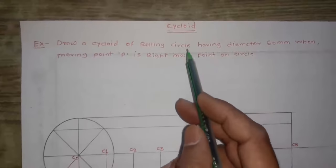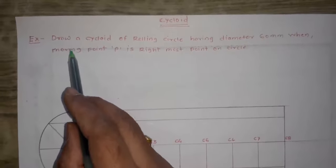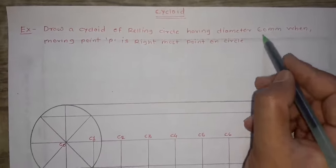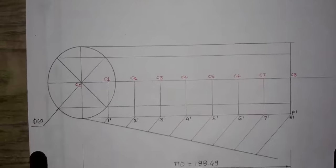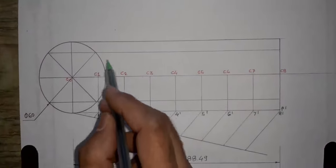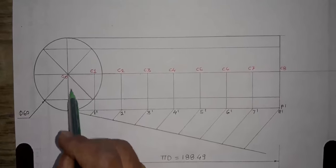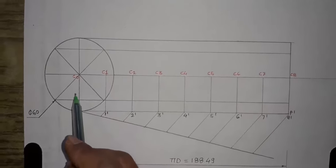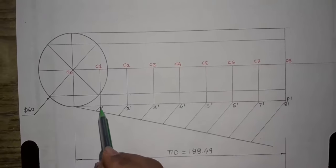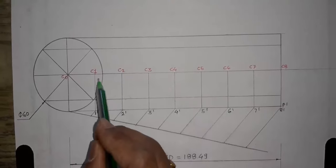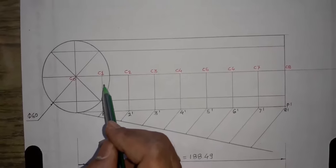Next, we will learn how to draw a cycloid curve when the moving point P is the rightmost point on a rolling circle. The problem statement is: draw a cycloid of a rolling circle having diameter 60 mm when moving point P is the rightmost point on a circle. The procedure is the same — draw the circle, divide it into 8 equal parts, mark the πD distance and divide it into 8 equal parts, send projectors to the center line to get new centers C1, C2 up to C8.